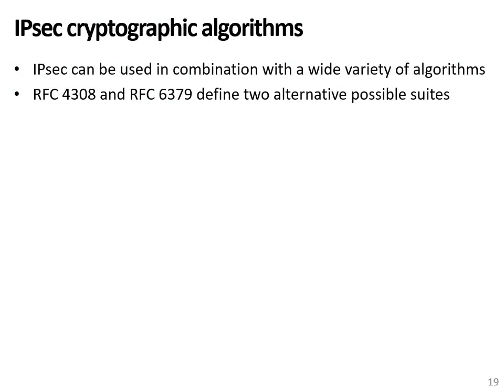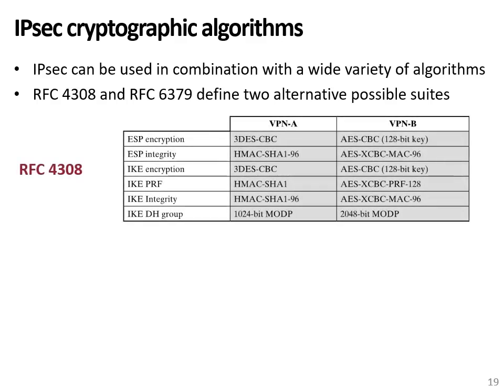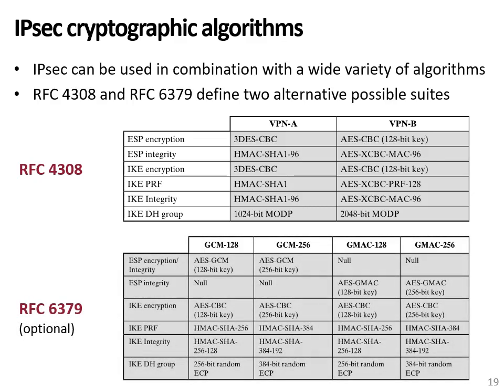IPsec can be used with a wide variety of cryptographic algorithms and does not mandate a specific one. However, to facilitate interoperability between different implementations, some combinations of algorithms referred to as suites have been standardized. RFC 4308 of the IETF specifies that each IPsec implementation should support two configurations: VPN-A and VPN-B. VPN-A mainly relies on Triple DES and HMAC for encryption and integrity, while VPN-B uses AES for both. Additionally, IETF RFC 6379 proposes other optional cryptographic suites, mostly relying on AES and HMAC.